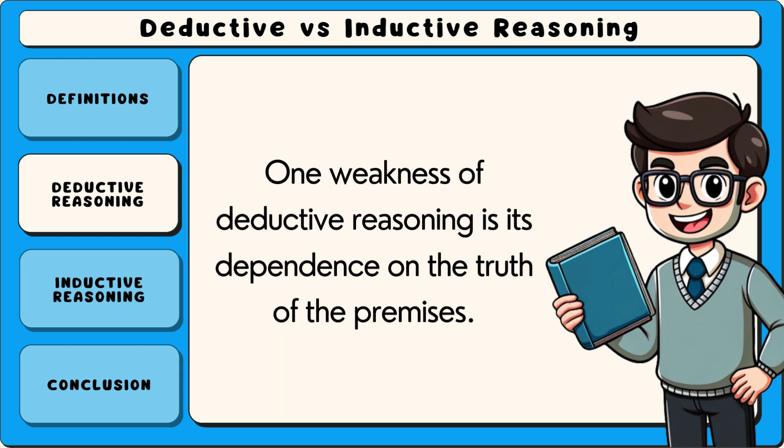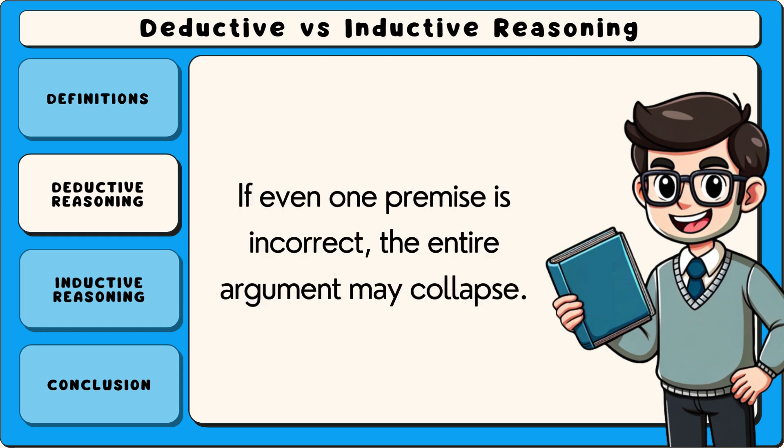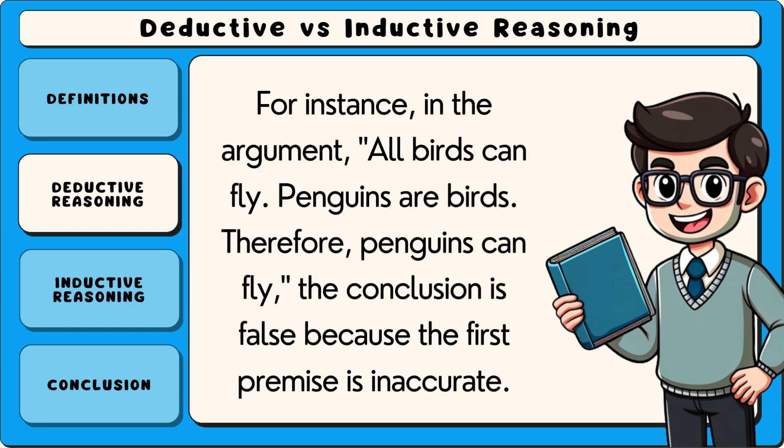One weakness of deductive reasoning is its dependence on the truth of the premises. If even one premise is incorrect, the entire argument may collapse. For instance, in the argument: All birds can fly. Penguins are birds. Therefore, penguins can fly. The conclusion is false because the first premise is inaccurate.